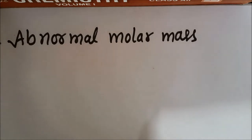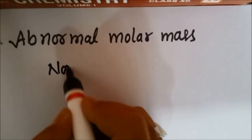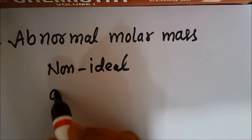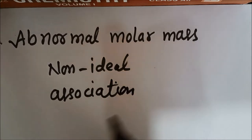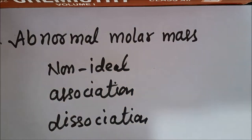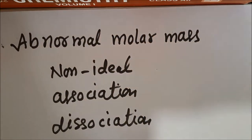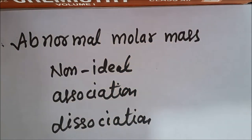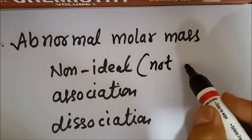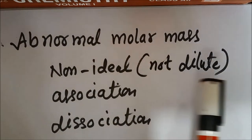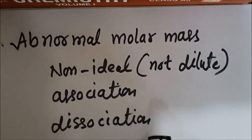Abnormal molar mass appears when the solution is non-ideal. First, the solution is non-ideal. Second, the solute undergoes association or dissociation. Non-ideal solution means the solution is not dilute, because colligative properties are applicable for dilute solutions. So either the solution is not dilute, or the solute undergoes association or dissociation.